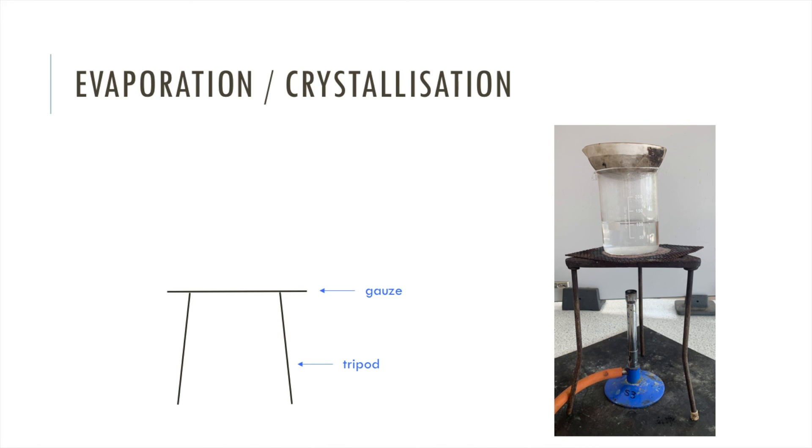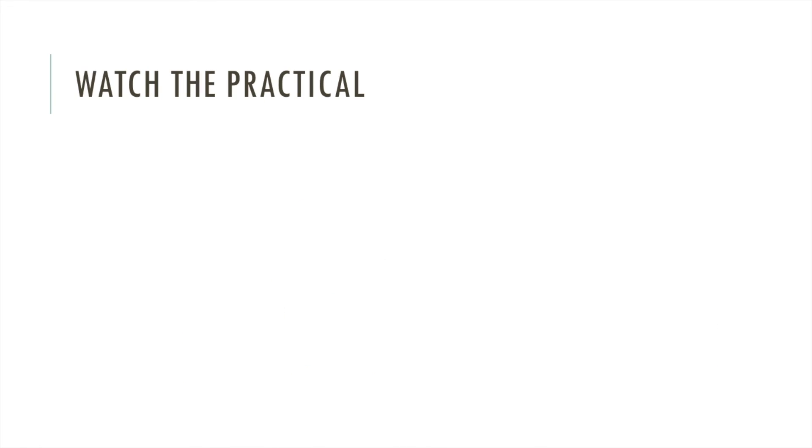So again, if you're asked to draw this in an exam, you would draw your gauze and tripod like so. The Bunsen burner just requires an arrow and the word heat. There's your beaker which contains water, and your evaporating basin is drawn like this.